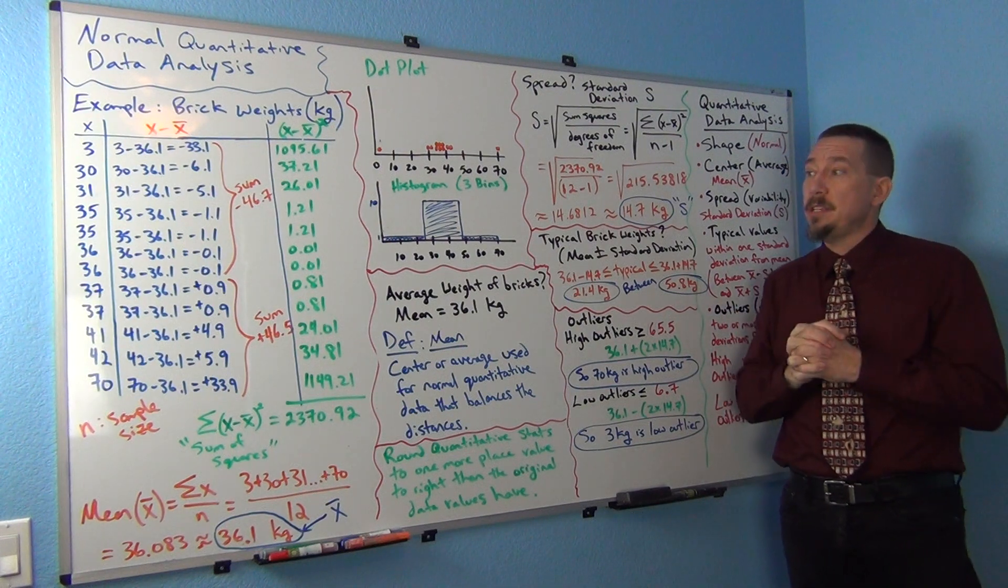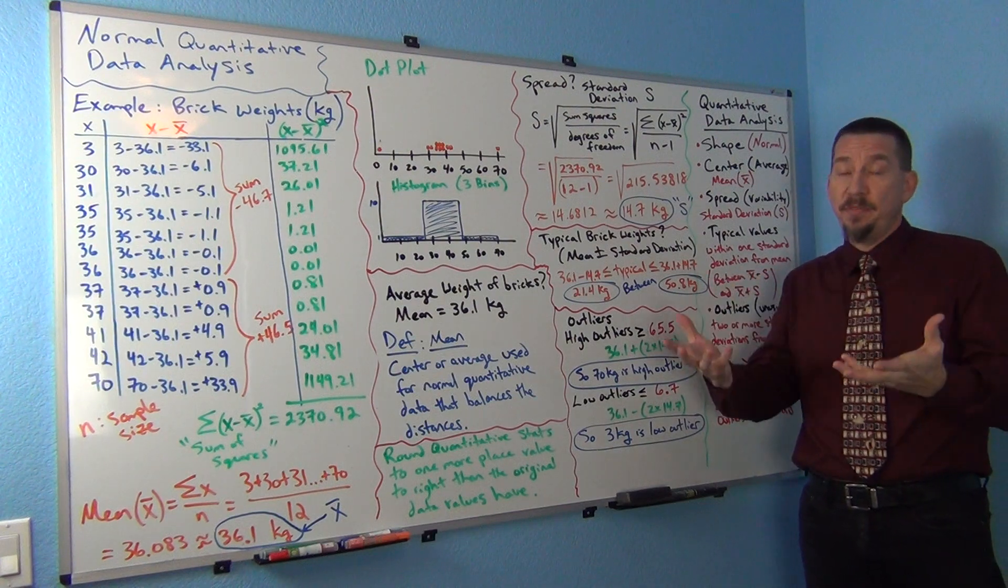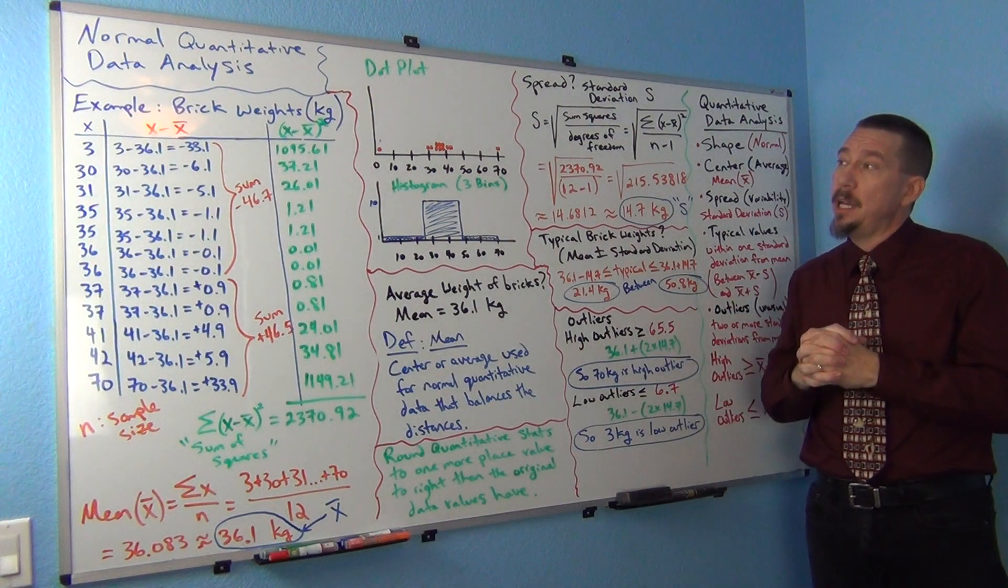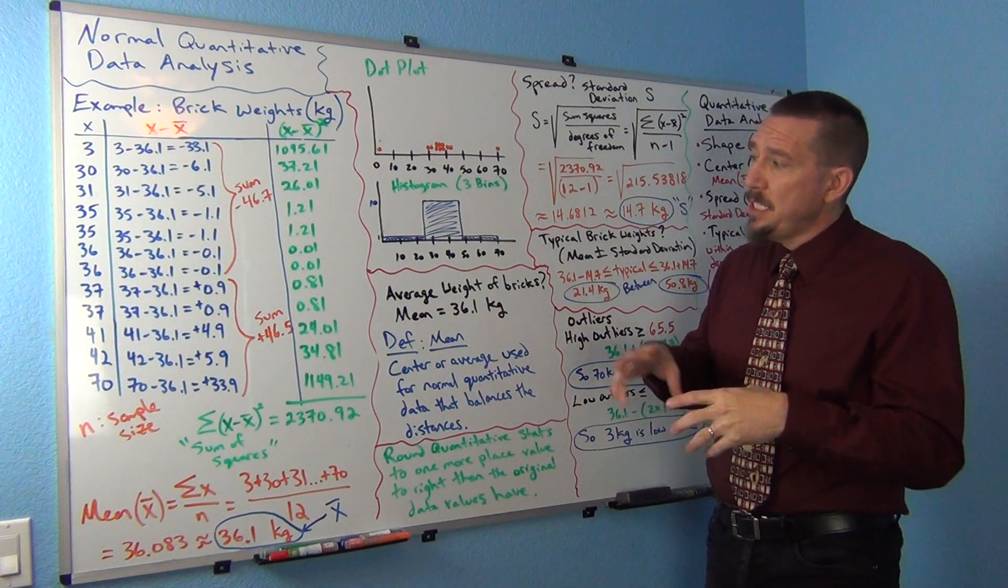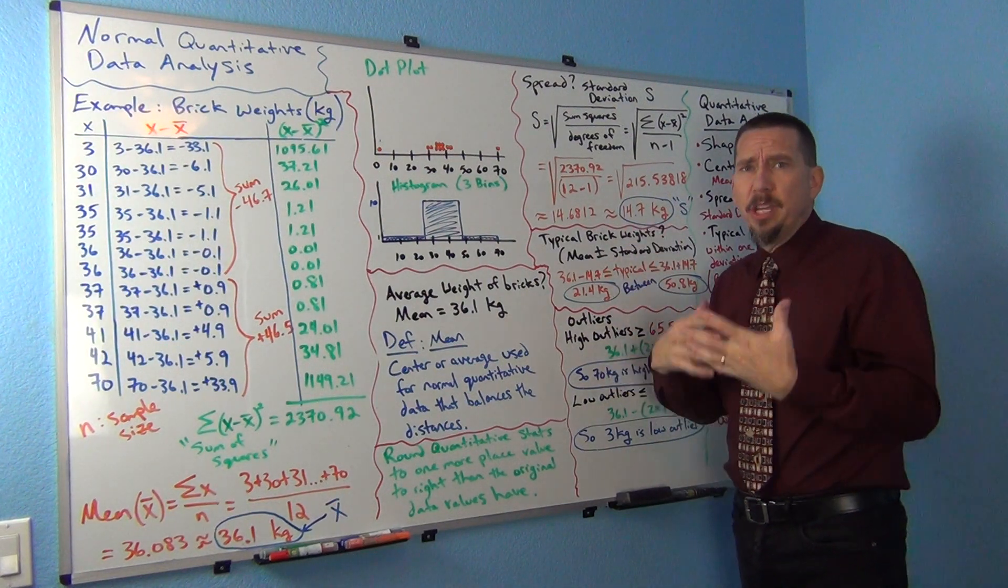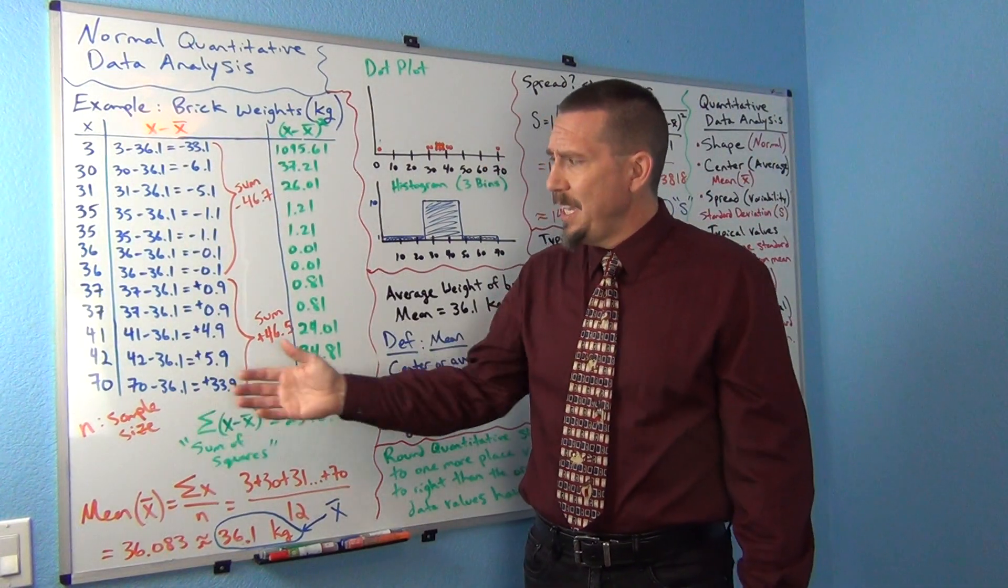But today is really about something called normal data. Normal is one of the most famous shapes in quantitative data. So we're going to look at that. I always like to give an example with context so you can kind of have an idea. So I just did a simple example.